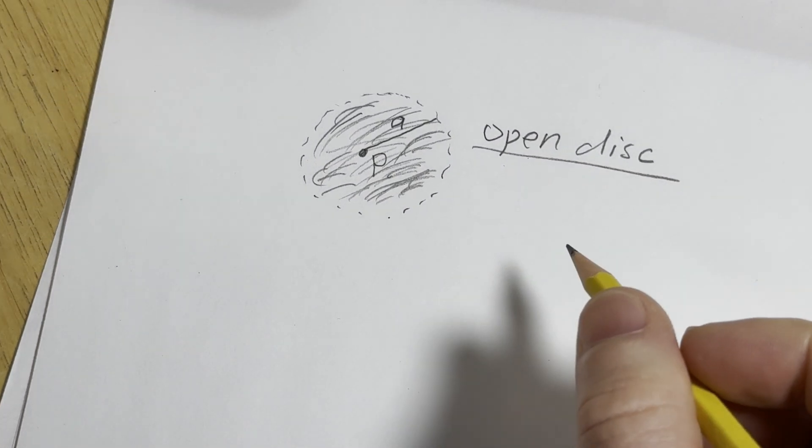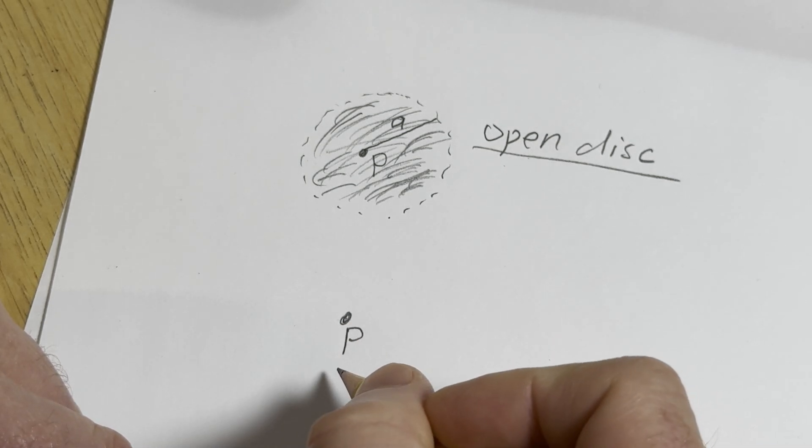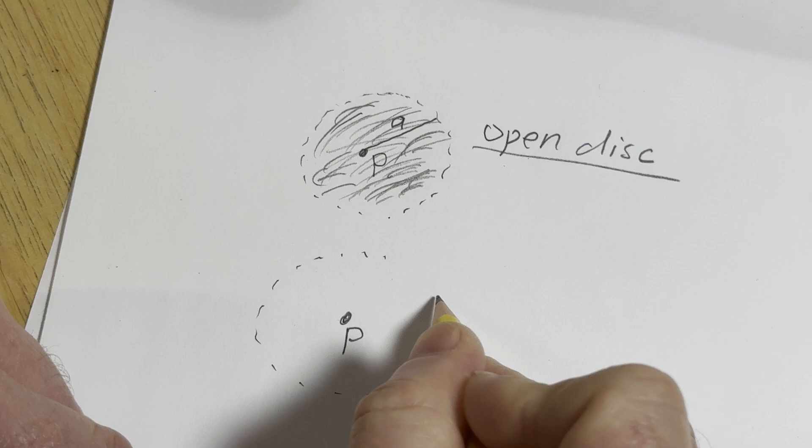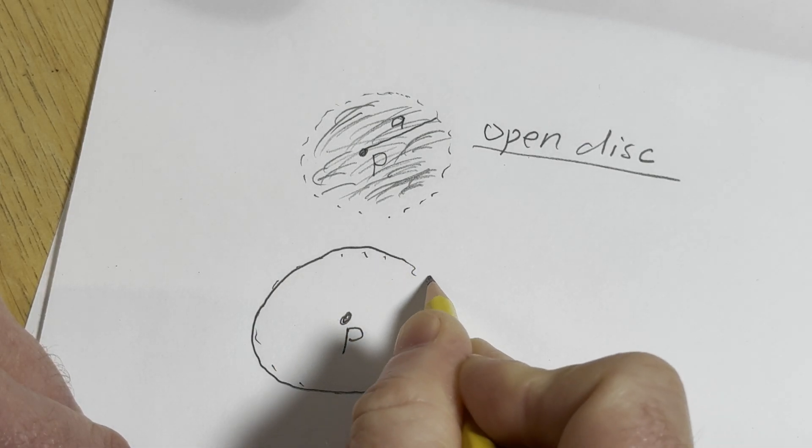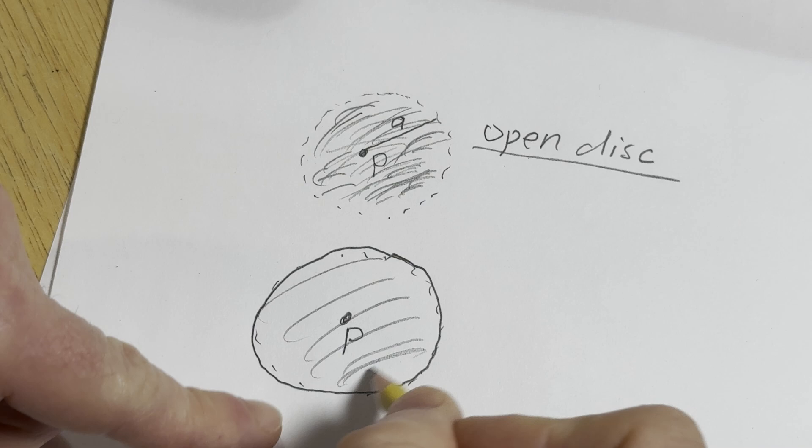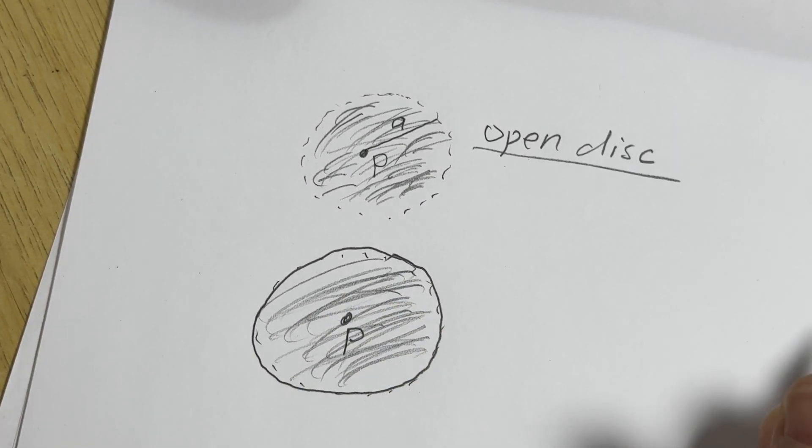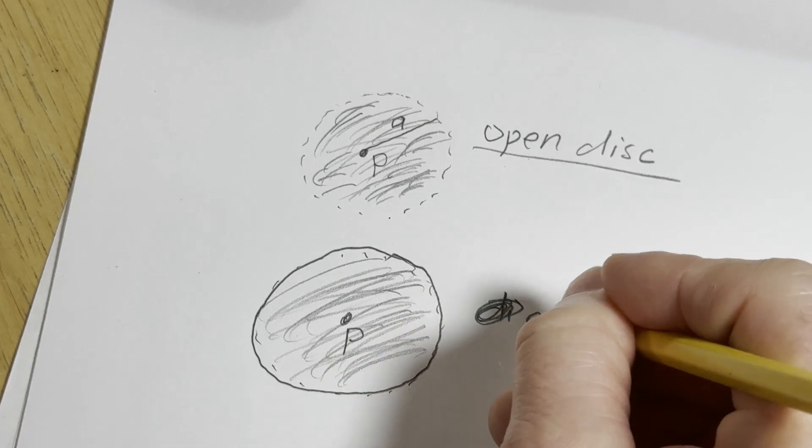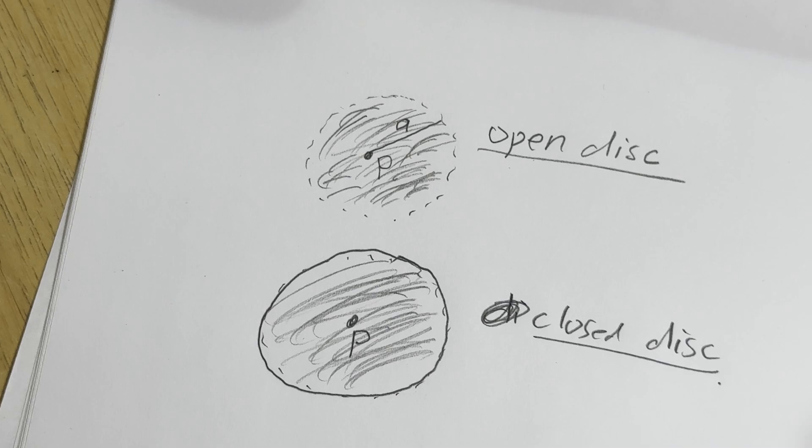And then the closed disc is going to be exactly the same. So here's p. And I know I'm putting the dots, but it just helps me draw. I'm really bad at drawing. I'm not a good artist at all. You can see my circle doesn't even look that good. It's a struggle. It's amazing I've been able to teach mathematics. This is the closed disc, because I'm a terrible artist.